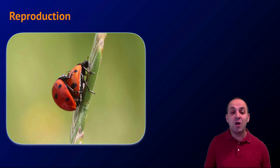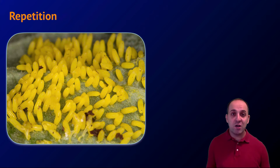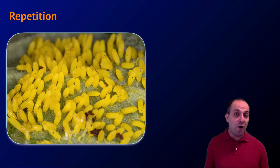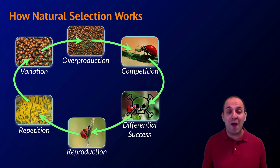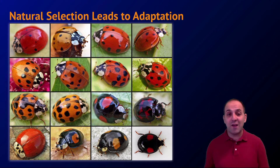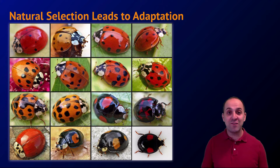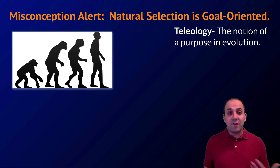When the most fit members of a population survive and reproduce, they pass on the variations that make them well-adapted to the next generation. This cycle repeats from generation to generation, and over time the members of any population become more fit — better adapted for their environment. This is natural selection, one of the major driving forces for the evolution of life on earth. Another way to put it: natural selection leads to the adaptation of a population for its environment.